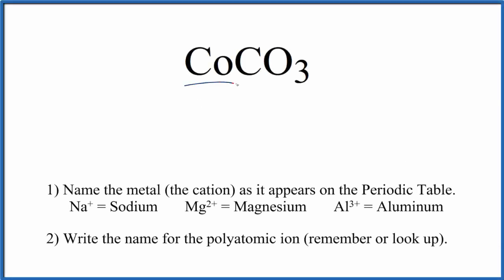To write the name for CoCO3, we first need to recognize that Co is cobalt, a transition metal, and then the CO3 here is a polyatomic ion. So we'll first name the metal as it appears on the periodic table: Co, that's cobalt.